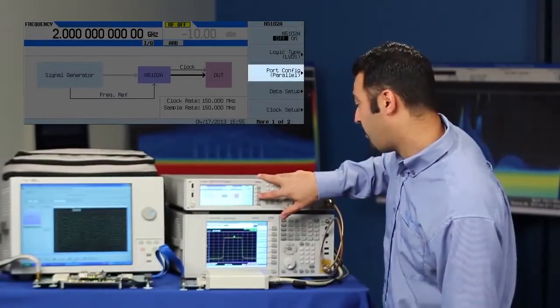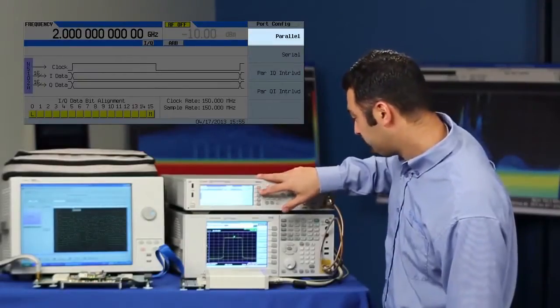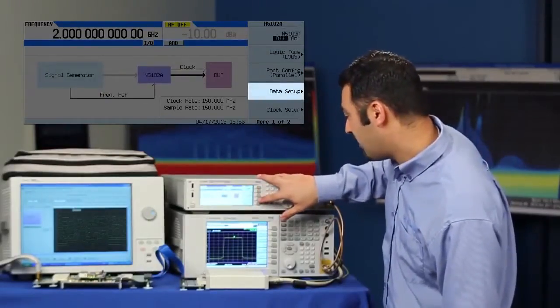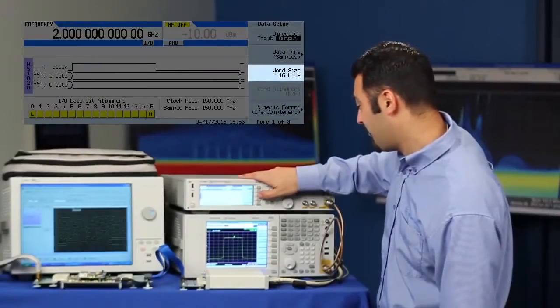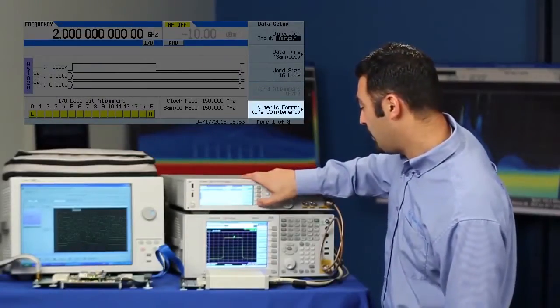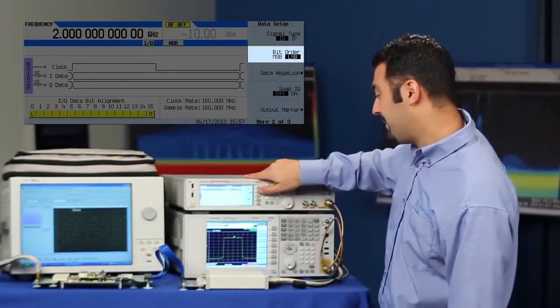Next, we want to do the port configuration. We're going to do parallel IQ. Next, we want to configure our data setup. We're going to do 16-bit words. And then we're going to do the AUX complement format. And we're going to have the bit order be LSB.